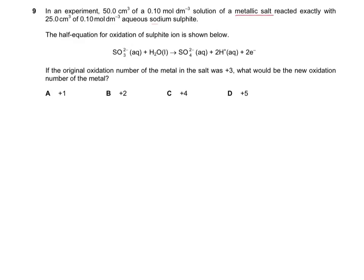Metallic ion reacting with sodium sulphide. Based on the reaction here, the equation for sulphide shows that sulphide undergoes oxidation. So therefore, the metal ions will undergo reduction.